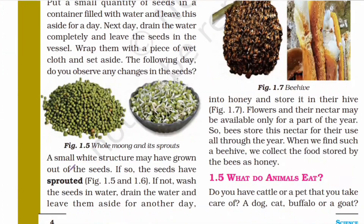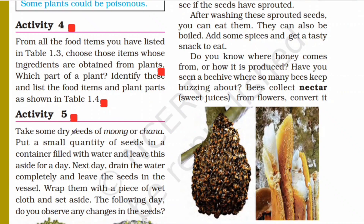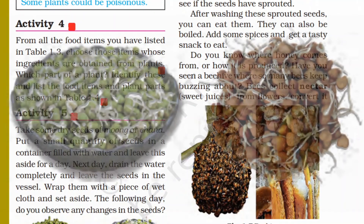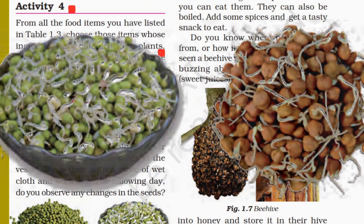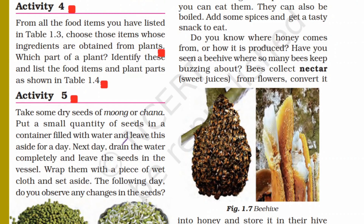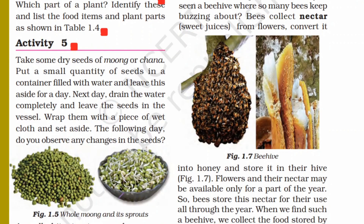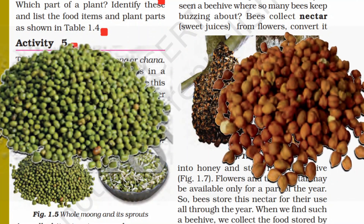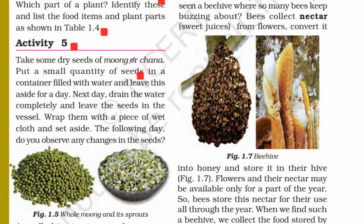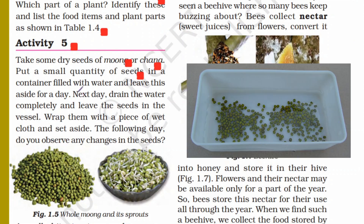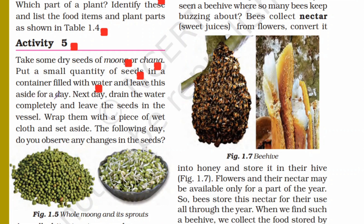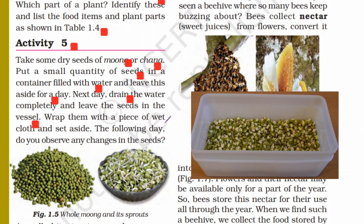Now Activity 5. Here we will make a tasty sprout snack that you can eat as a morning or evening snack. Take some dry seeds of moong and chana. Put a small quantity of seeds in a container and fill it with water. Leave it for one day. The next day, drain the water completely and leave the seeds in a vessel or wrap them in a piece of wet cloth and set aside.